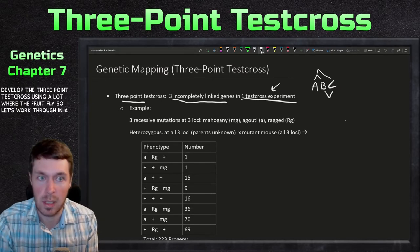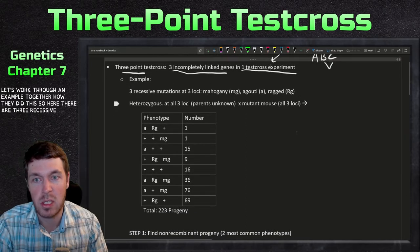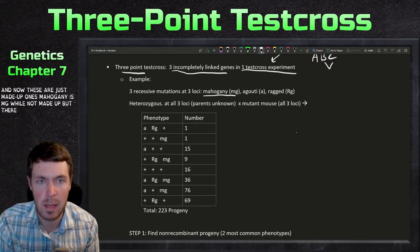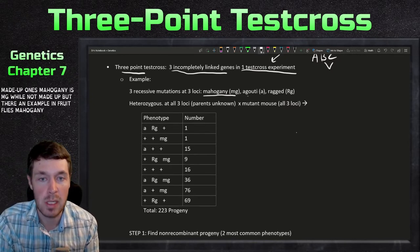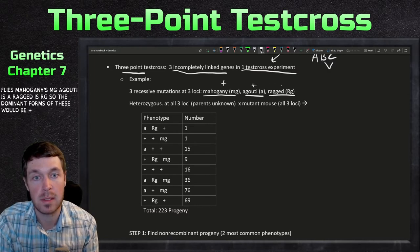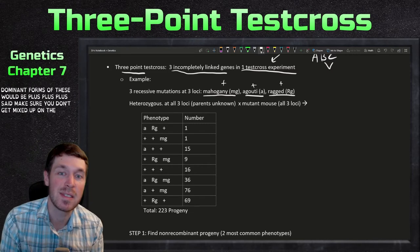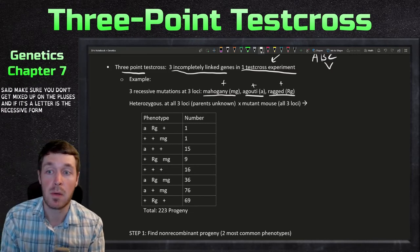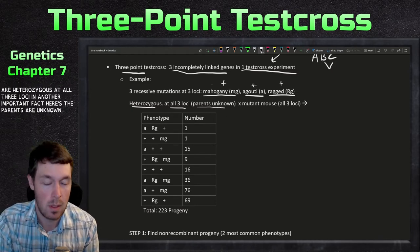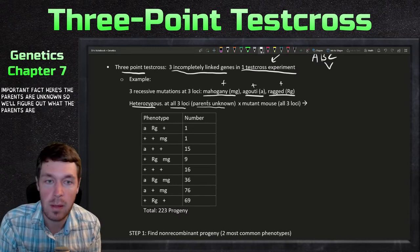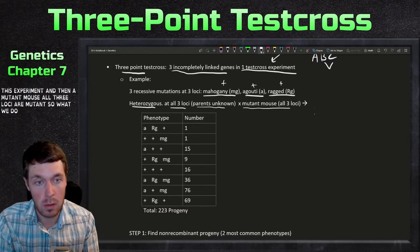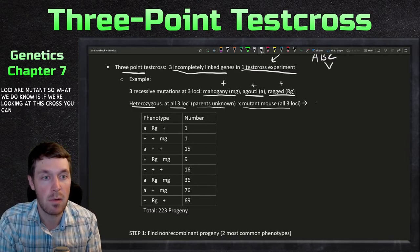Let's work through an example together. There are three recessive mutations at three loci. Mahogany is mg, agouti is a, and ragged is rg. The dominant forms would be plus, plus, plus. These are heterozygous at all three loci. An important factor here is that the parents are unknown — we'll figure out what the parents are throughout this experiment. The mutant mouse has all three loci mutant.